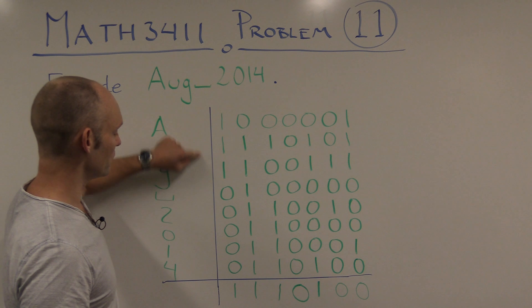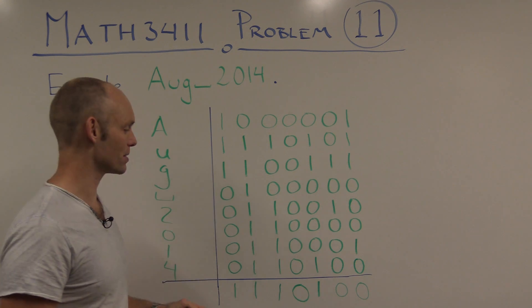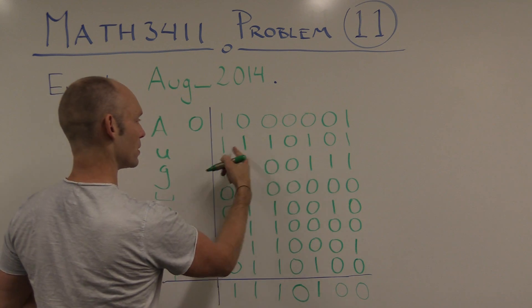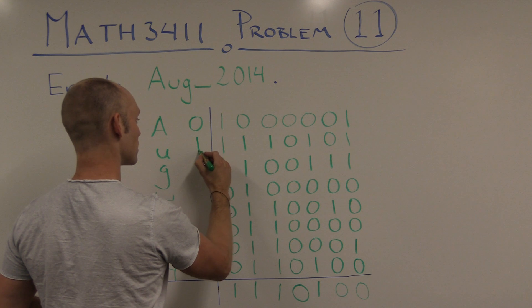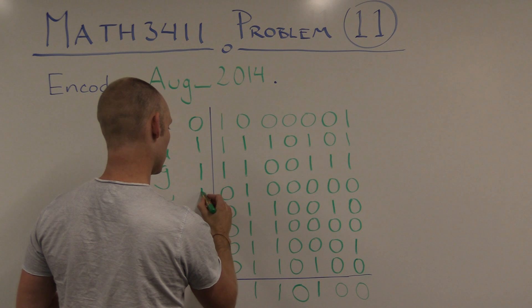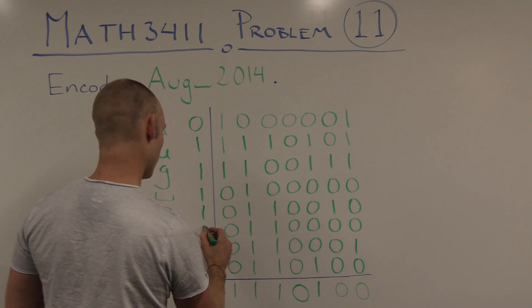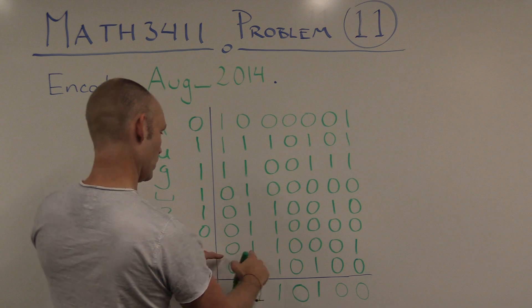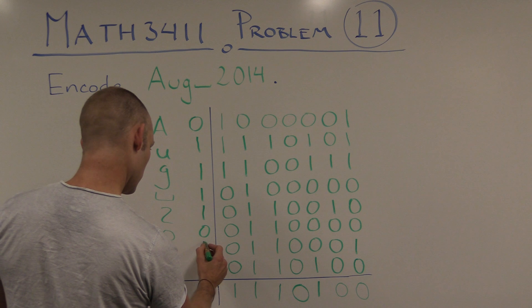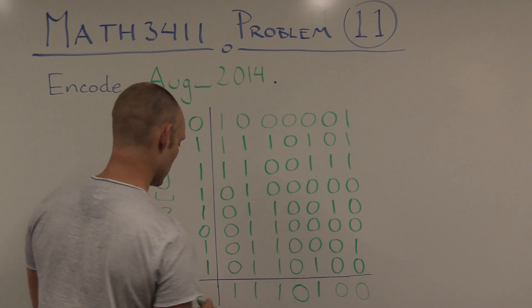Now, we have to do the same over here too, to get the 8-bit ASCII checksum. So we have 0 here. Then we have 5 ones in the next column, also 5 in the next. Continuing through these columns, counting the ones to determine whether we need to add a parity bit for each.